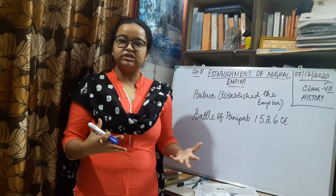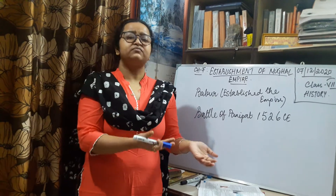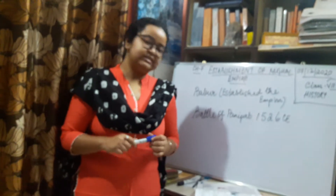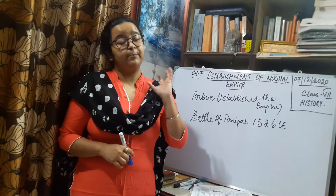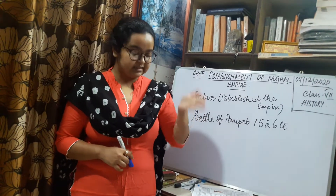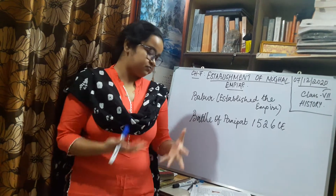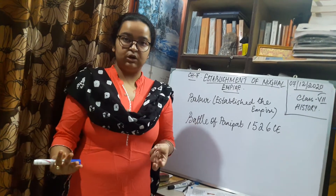Babur defeated Daulat Khan Lodi and marched towards Delhi. Ibrahim Lodi had a huge army while Babur had a very small one, but with military skills and tactics Babur defeated Ibrahim Lodi and gained control over the Delhi Sultanate. Ibrahim Lodi was killed, Babur marched into Delhi, and Babur was proclaimed the Emperor of India, marking the establishment of Mughal rule.